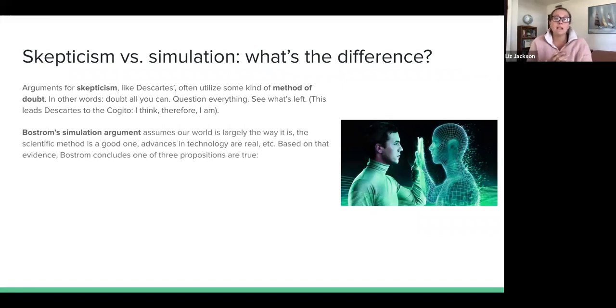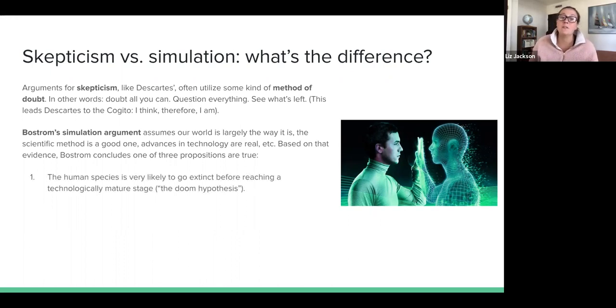Bostrom, on the other hand, makes what's called the simulation argument. This assumes our world is largely the way that we perceive it, and at least assumes the scientific method is a good one, that these advances in technology are real. And based on this, Bostrom concludes that one of three propositions is true: either the human species is very likely to go extinct before reaching a technologically mature stage - that's what's known as the doom hypothesis. So we're not going to get to the stage in technology where we can easily run these simulations of our ancestors.